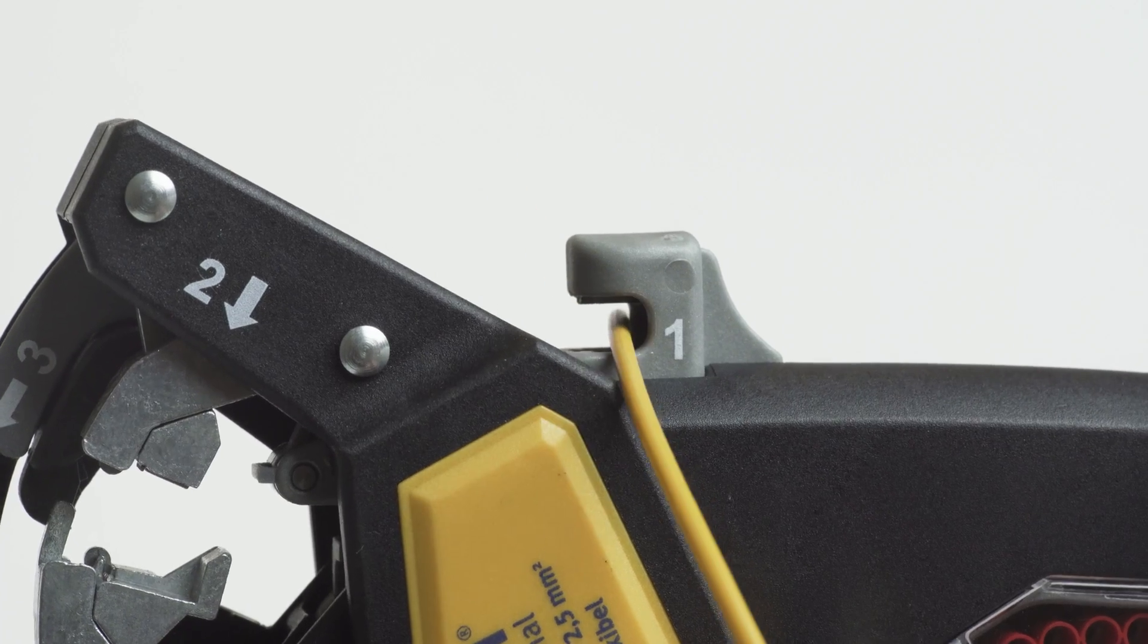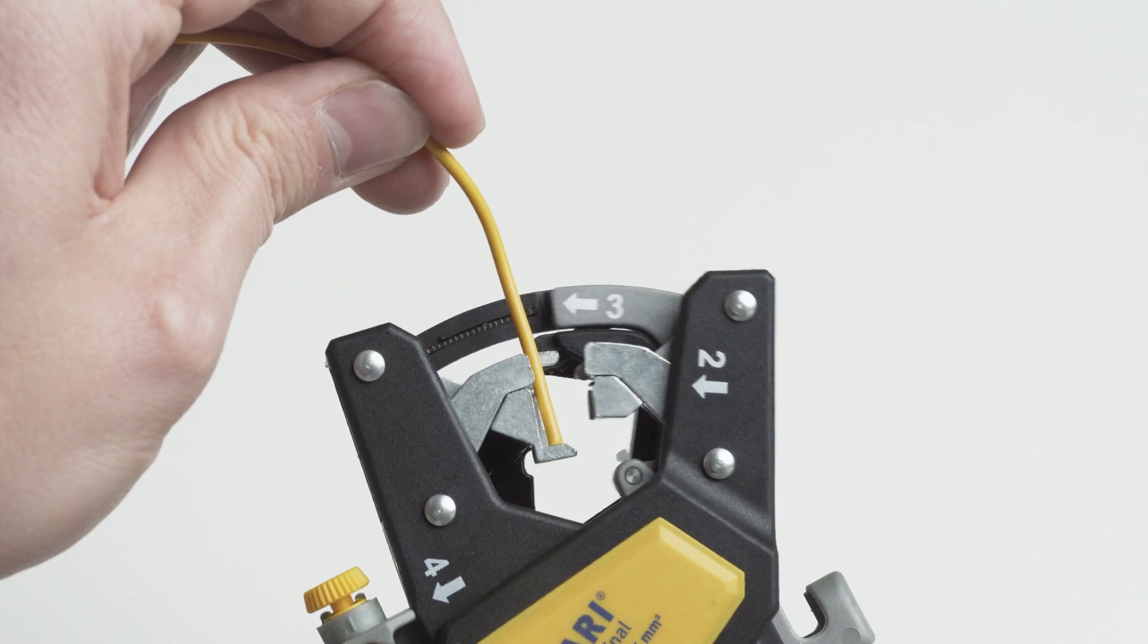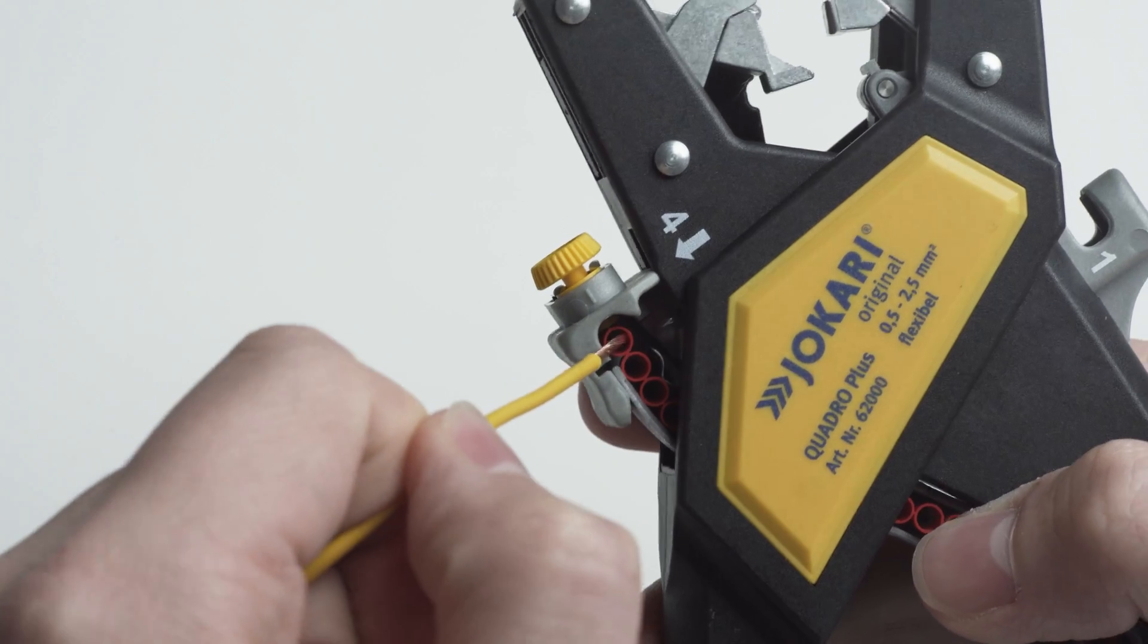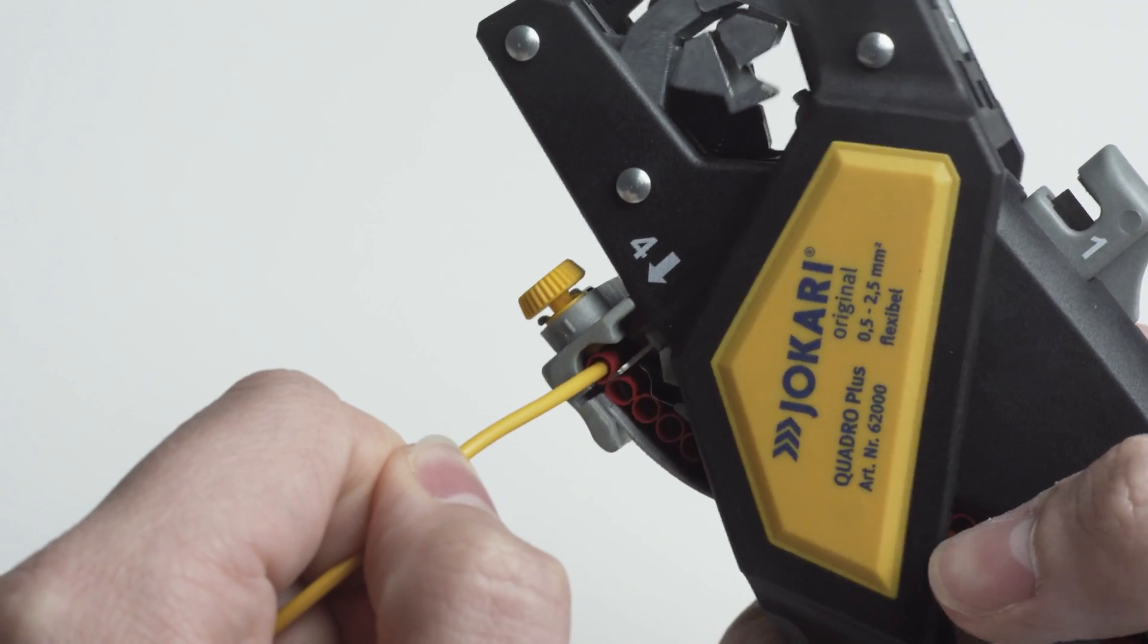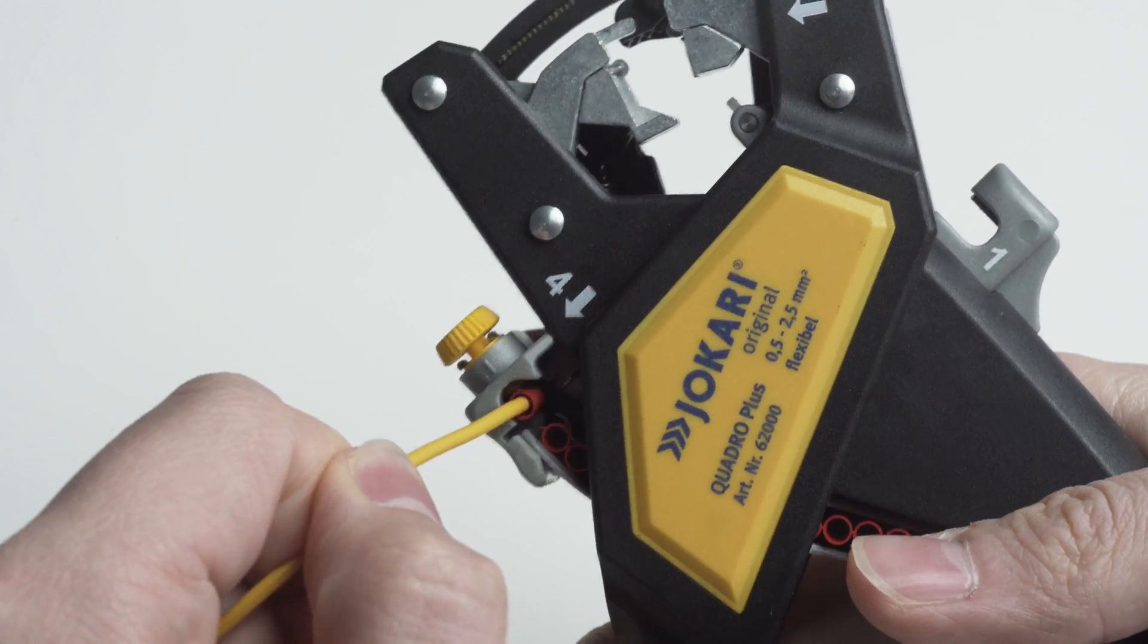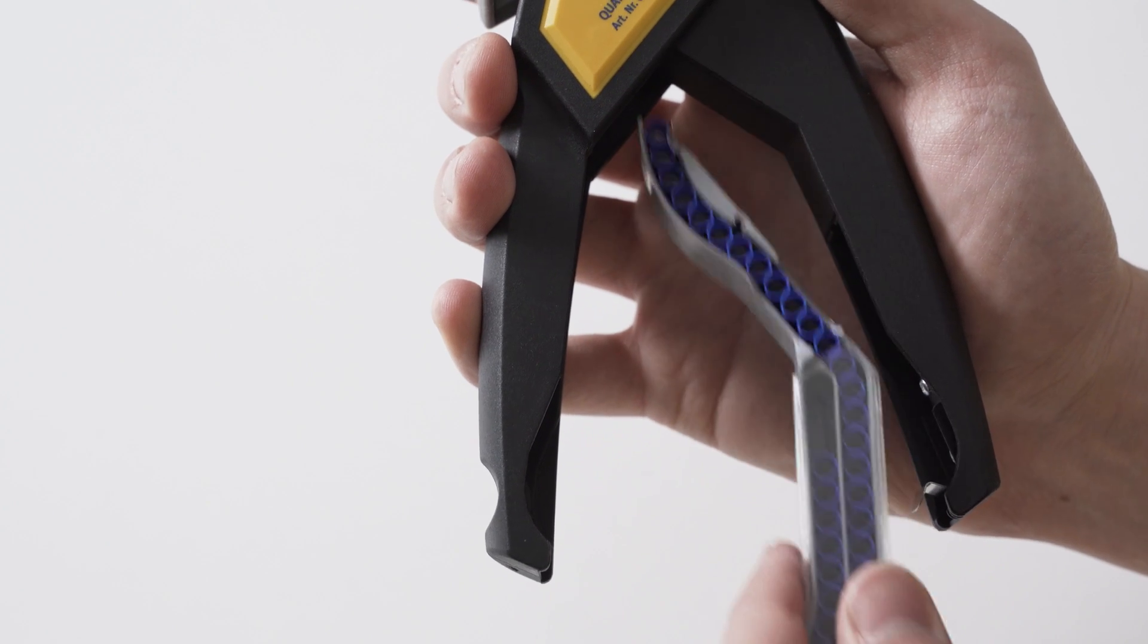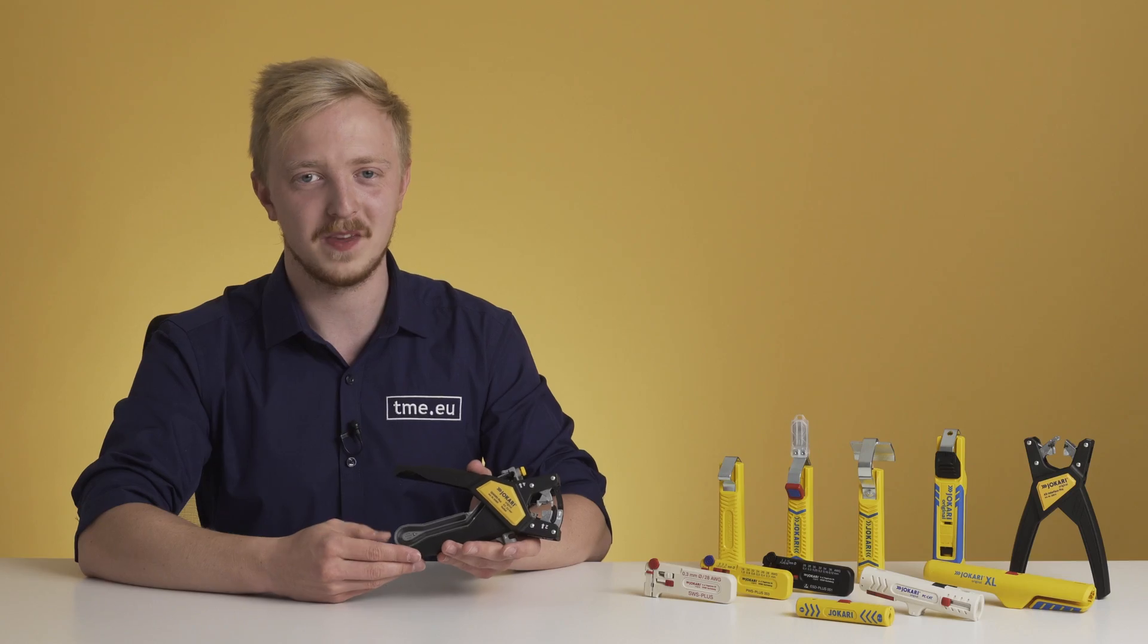It combines four features: cutting, insulation stripping, twisting and crimping. The quick reloading of connector sleeves by switching magazines enables fast and efficient work. And it always looks so impressive.